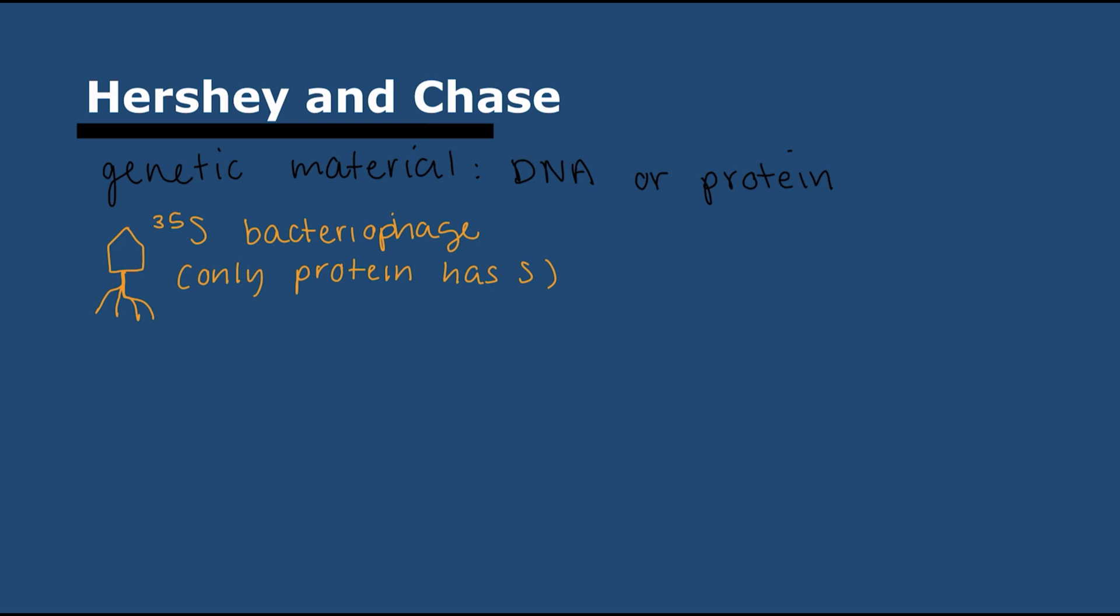To find out whether it was DNA or protein, they made two bacteriophages. One had radioactive sulfur—only proteins have sulfur, DNA does not. The other bacteriophage had radioactive phosphorus—only DNA has phosphorus, protein does not. It was basically a way to distinguish between the two different compounds.